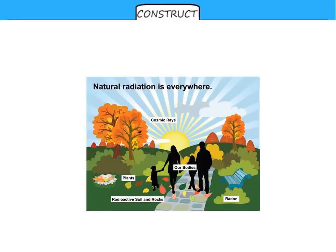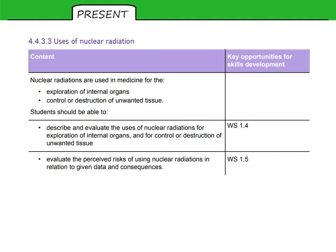Natural radiation is everywhere. From the specification, we need to know about uses of nuclear radiation. The specification specifically mentions uses in medicine for exploration and for control and destruction. We need to be able to describe and evaluate those uses and look at risks and benefits.